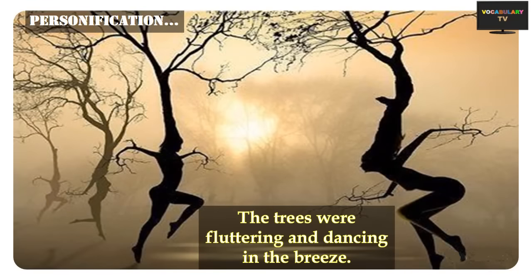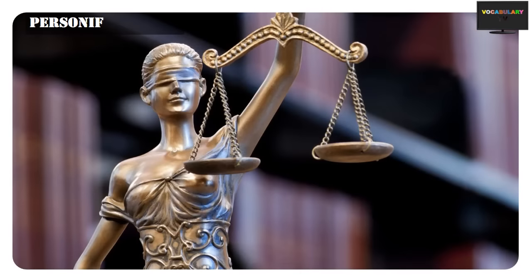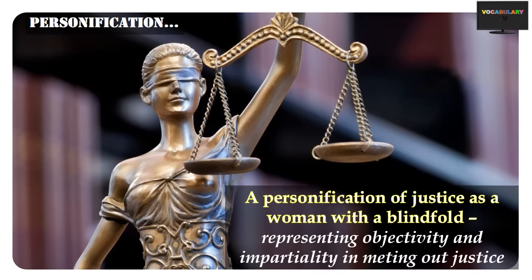Similarly, when the famous poet William Wordsworth described the trees as 'fluttering and dancing in the breeze' in his poem The Daffodils, an image springs up in the reader's mind as if trees in human form were dancing. Sometimes we personify an abstract idea such as justice. In courtroom dramas, one can often see justice personified as a woman with eyes covered and balancing scales. People often say justice is blind and sometimes deaf, whenever there are irregularities in the process.